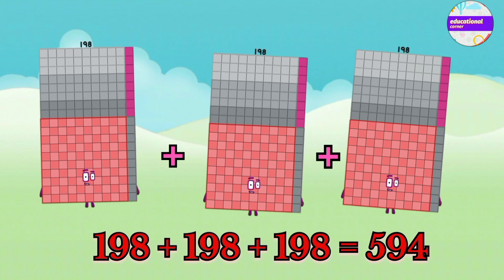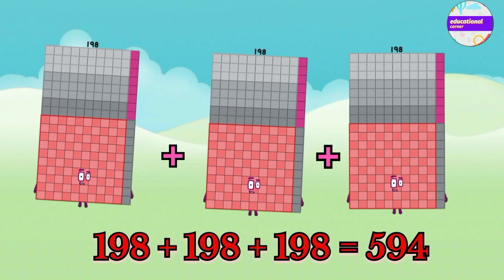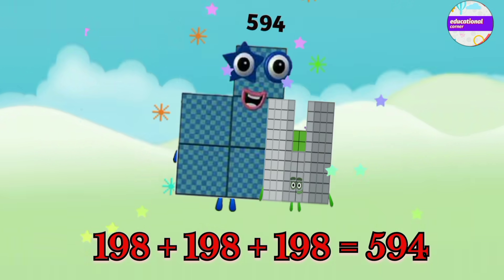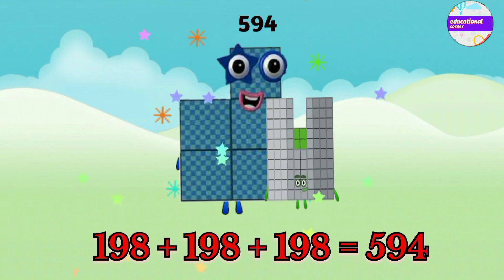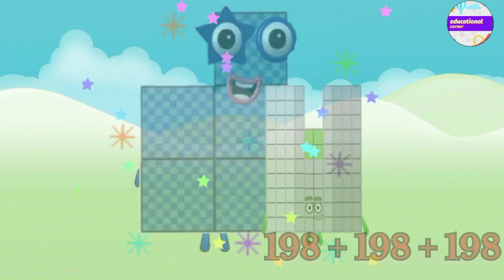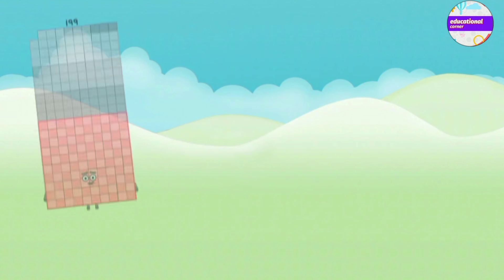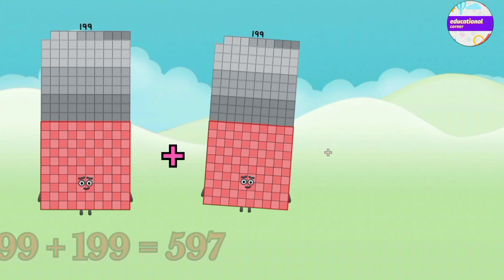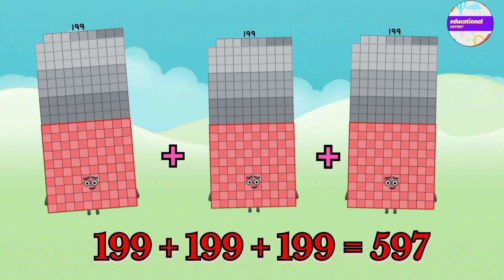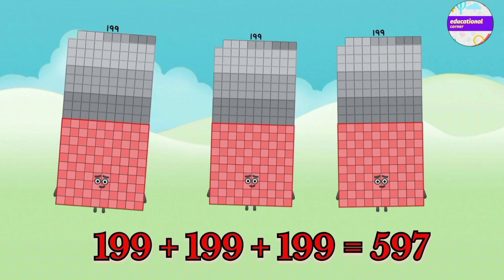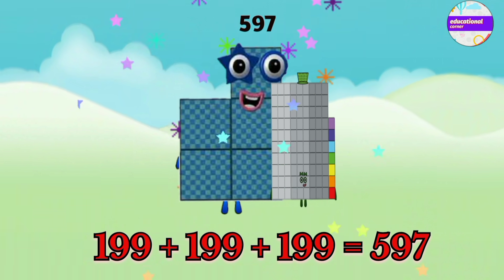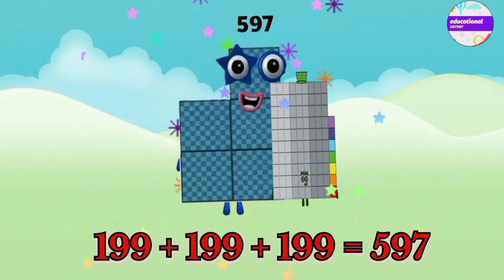198 plus 198 plus 198 equals 594. 199 plus 199 plus 199 equals 597.